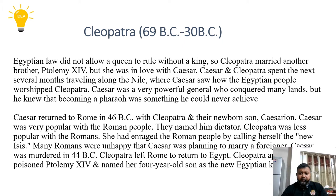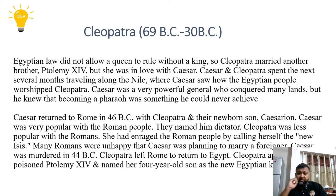Cleopatra wanted Caesar to stay in Egypt and become a pharaoh, but Caesar had something else in mind. Caesar returned to Rome in 46 BC with Cleopatra and their newborn son. Caesar was very popular with the Roman people and they named him dictator of Rome. Cleopatra was not that popular with the Romans — she had enraged the Roman people by calling herself the new queen Isis. Many Romans were unhappy that Caesar was planning to marry a foreigner. Caesar was murdered ultimately in 44 BC.